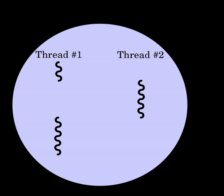In computer programming, single-threading is the processing of one command at a time. The opposite of single-threading is multi-threading. In the formal analysis of variable semantics and process state, the term single-threading can be used differently to mean "backtracking within a single thread", which is common in the functional programming community.